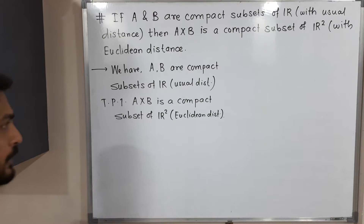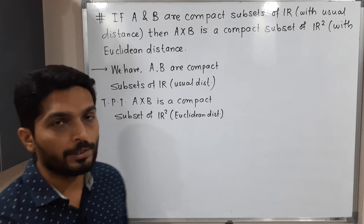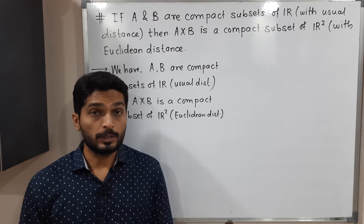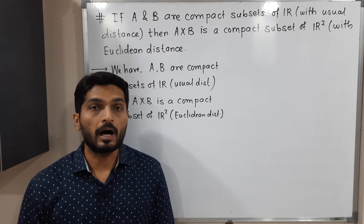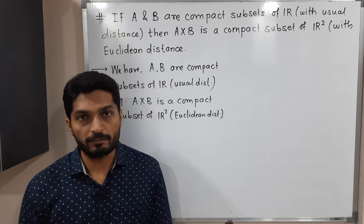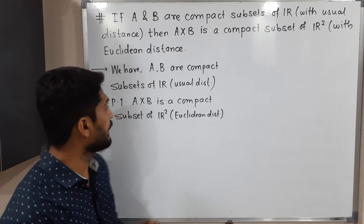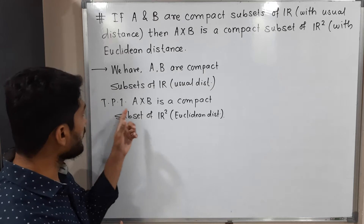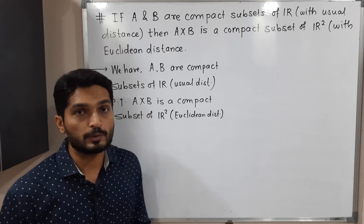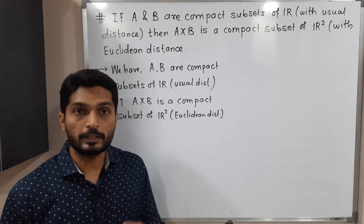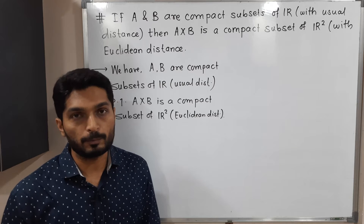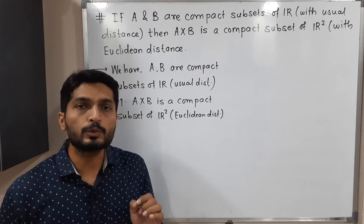In this video we are going to discuss this example. Here A and B are compact subsets of Rd, where d is a usual distance, and we have to prove that A×B is a compact subset of R2d with a Euclidean distance.